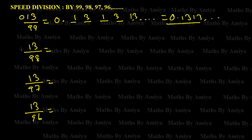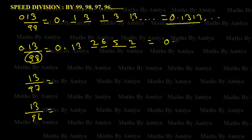For 13 divided by 98: we have a double digit, looking for the third digit — 0.13. The gap between 100 and 98 is 2, so multiply by 2: 13 × 2 = 26, then 26 × 2 = 52. The first four digits are 0.1326... and so on.